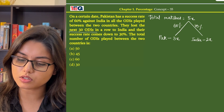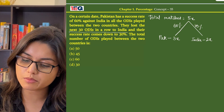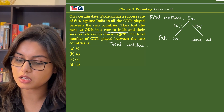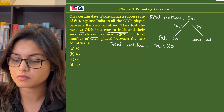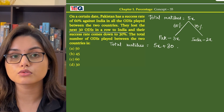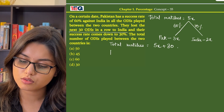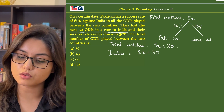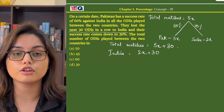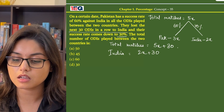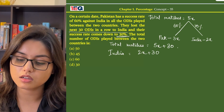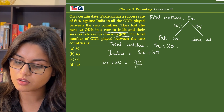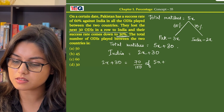Now they lost the next 30 ODIs in a row to India, so the total number of matches increases and becomes 5x plus 30. India won those 30 matches, so the number of matches India won is 2x plus 30. Since Pakistan's success rate comes down to 30%, India's success rate is 70%, so 2x plus 30 equals 70% of (5x plus 30).